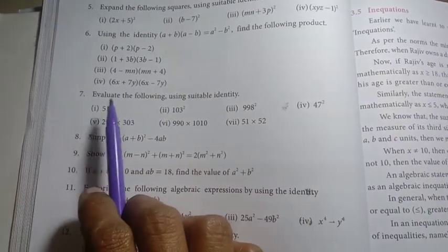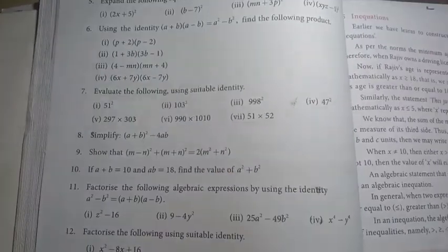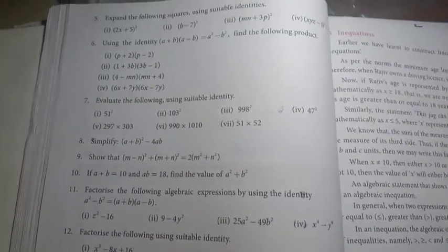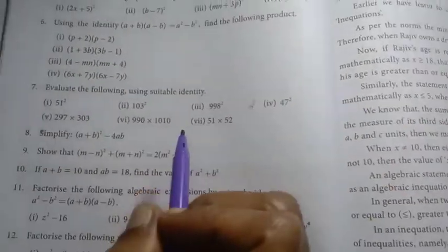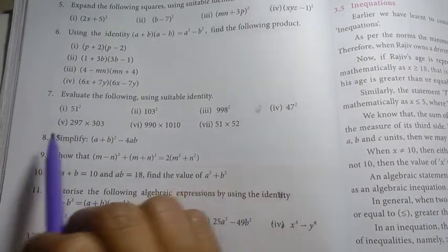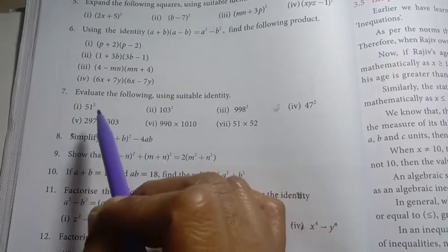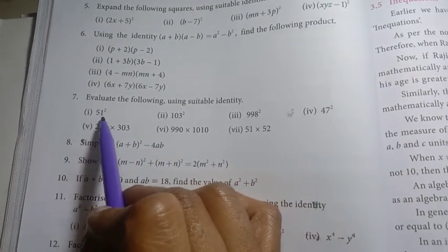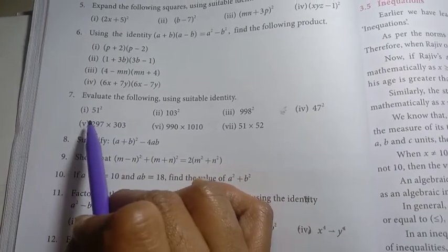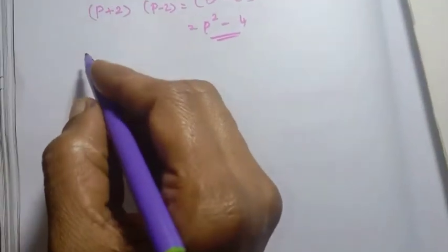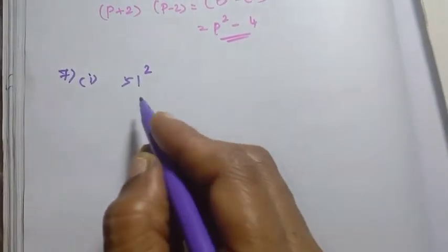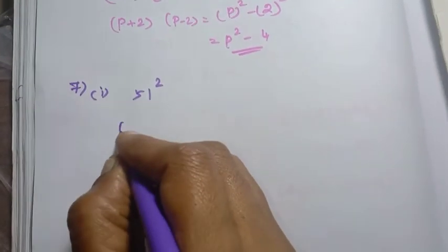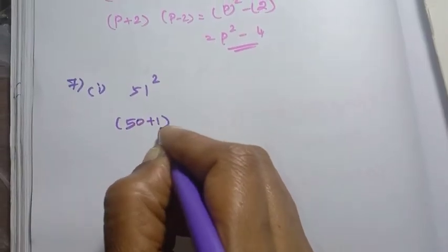We are required to evaluate the following using a suitable identity. The first sum is 51 square. What is 51 square? We write it as 50 plus 1, the whole square.